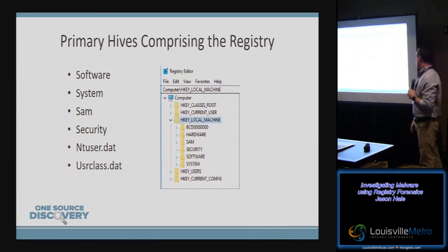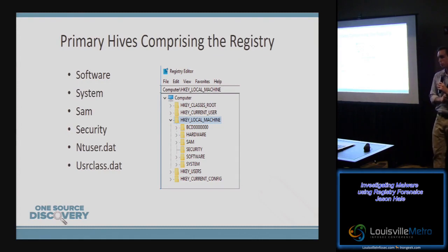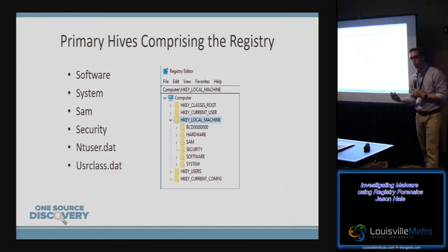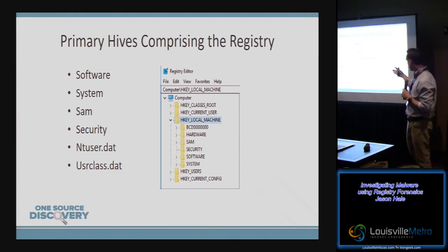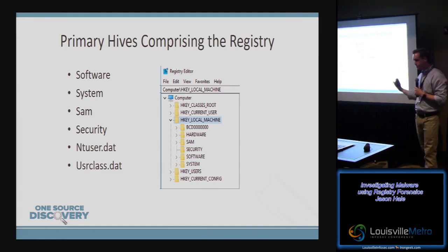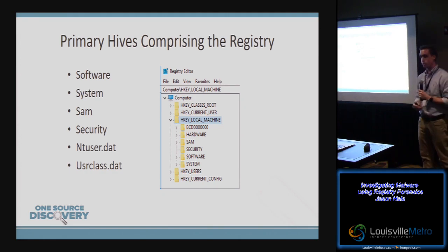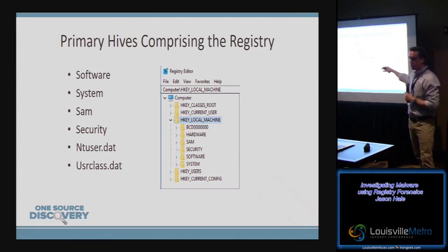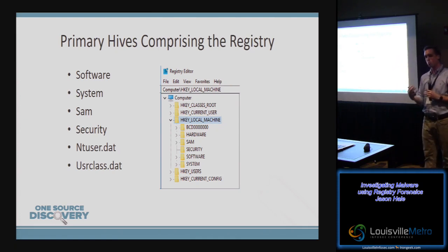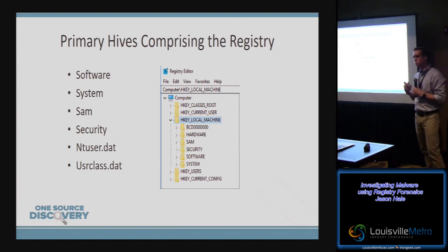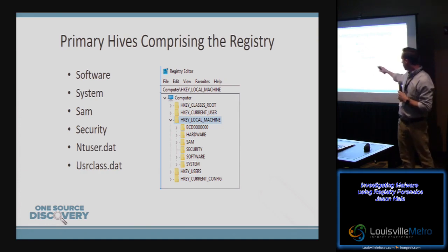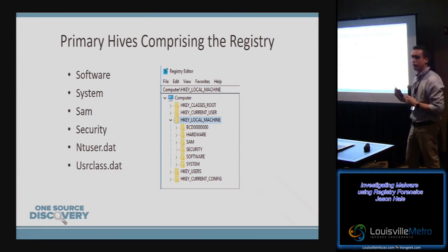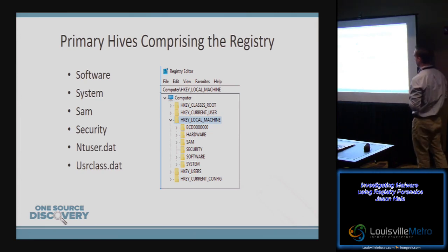When you look at the registry in RegEdit — just type RegEdit in the search bar in Windows 10 — it brings up something that looks similar to this screenshot. As we saw, it has looked the same for several years. But what's happening is Windows is doing a lot of aggregation and work for you in the background, combining information from multiple files on disk called registry hives.